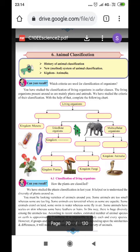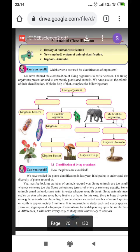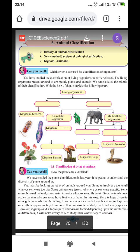Good morning dear students. Welcome back again with a new lesson and a new session of Science 2, lesson number 6, Animal Classification, in which we are going to study about history of animal classification, the new system of animal classification, and kingdom animalia.